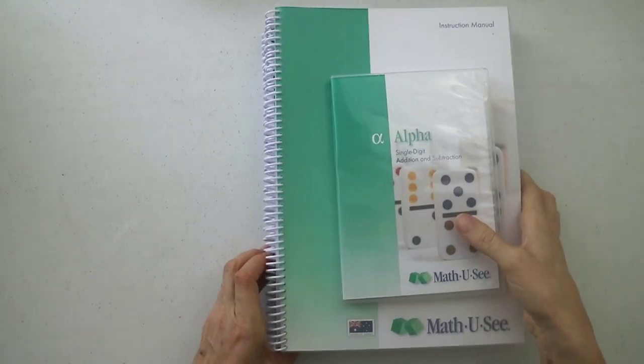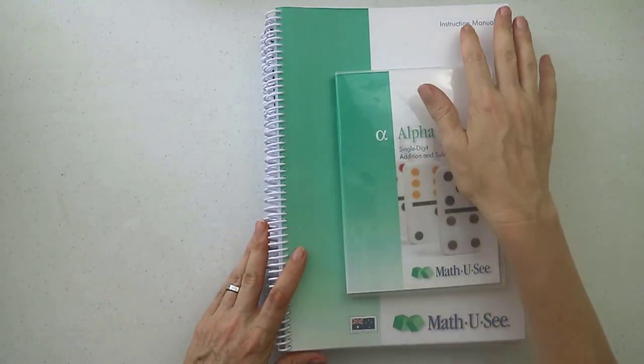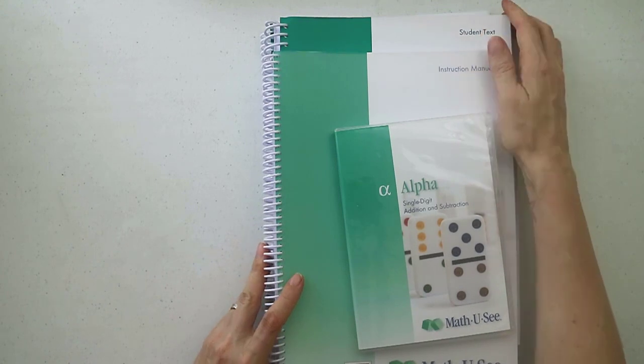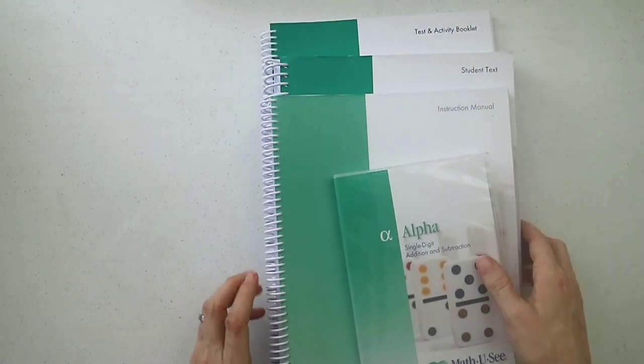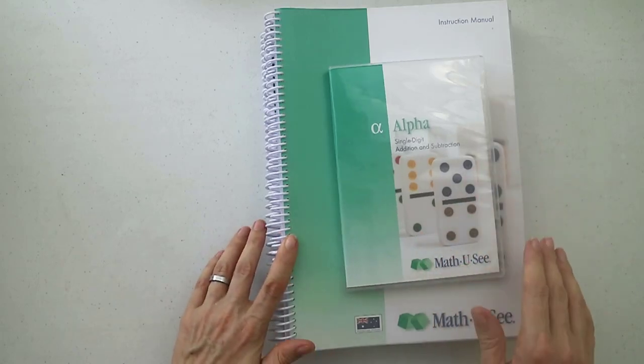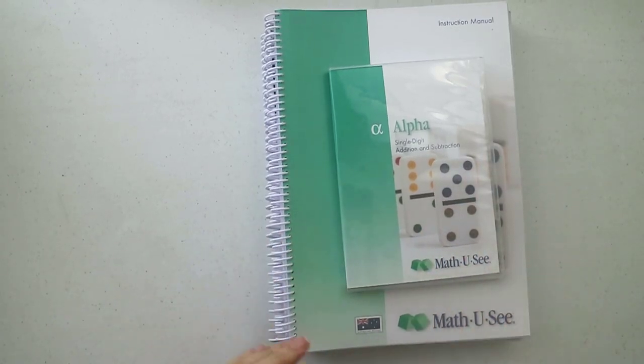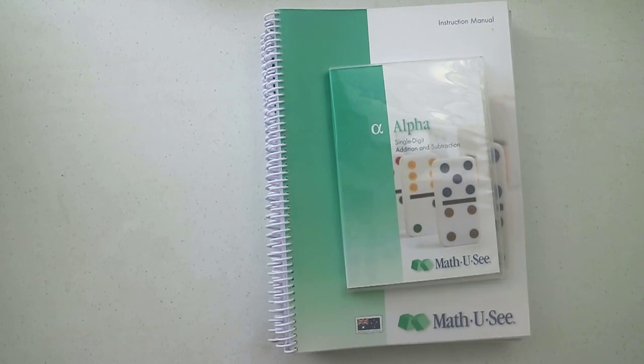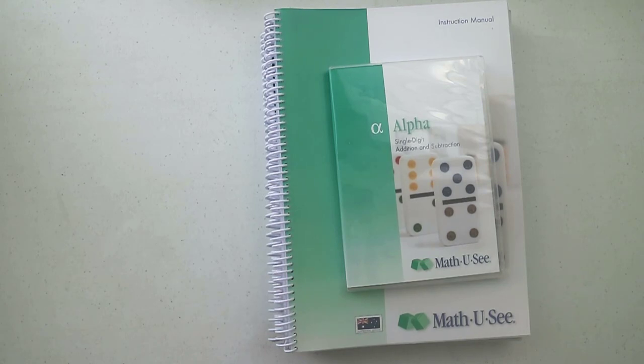Let's have a look at what you get in each level. In each level you will get a DVD and instruction manual, a student text, and a test and activity booklet. The DVD has lessons on it, they're done by Steve Demme who is the creator of Math-U-See. They're quite short and straightforward, there's a bit of humor in them which my kids quite like.